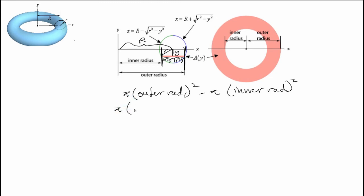The outer radius is capital R plus square root r squared minus y squared. And the inner radius is capital R minus square root of r squared minus y squared. We have our equation right here. If you simplify this equation using various algebra, you're going to get 4 pi capital R square root of r squared minus y squared.